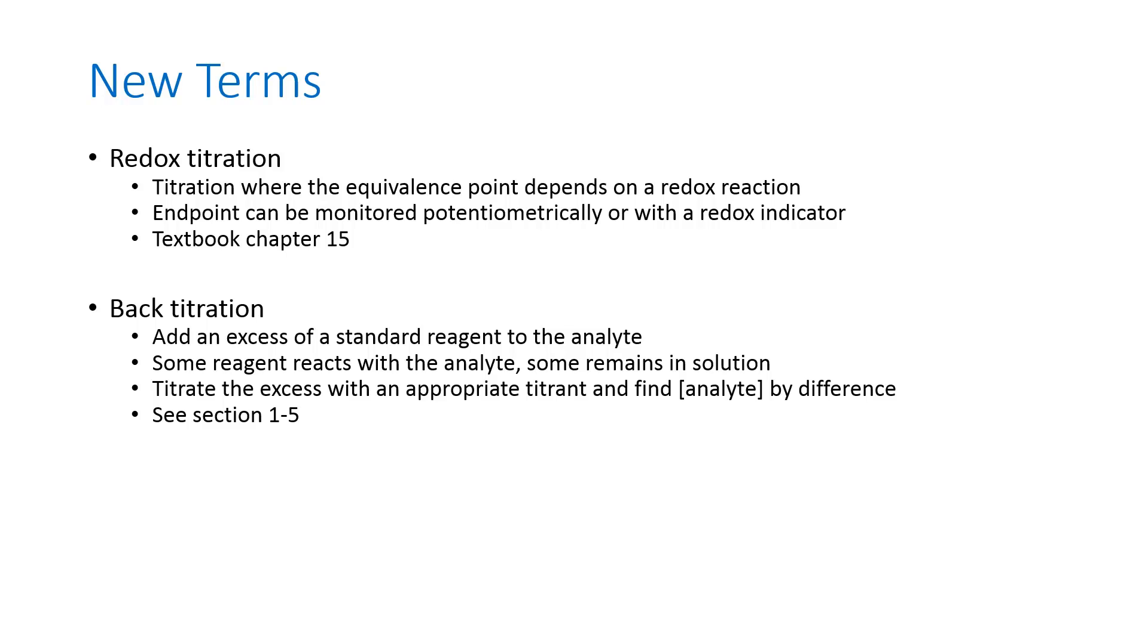But in general, for a back titration, you start with your analyte in solution in your titration flask, and you add to that an excess of a standard reagent. The reagent and the analyte react with each other, and since you added an excess of the standard, some is left over. You titrate away that amount that's left over, and so you can find, based on how much you added and how much is left behind, the difference is how much reacted with the analyte. There's a brief discussion of this in Section 1.5 of your book.